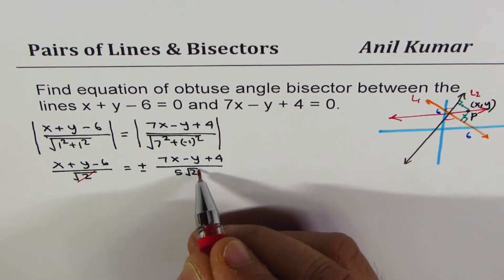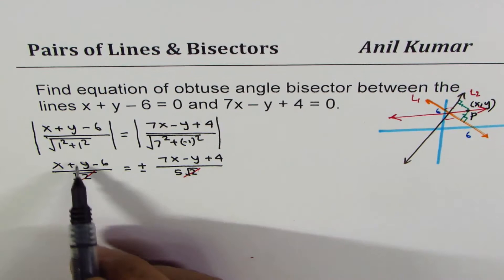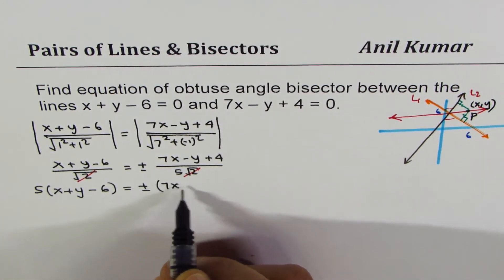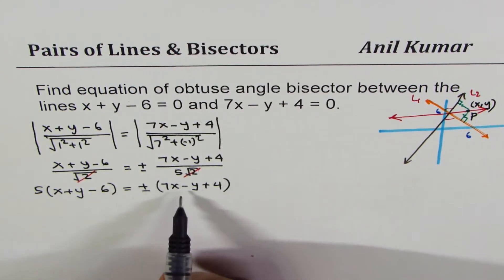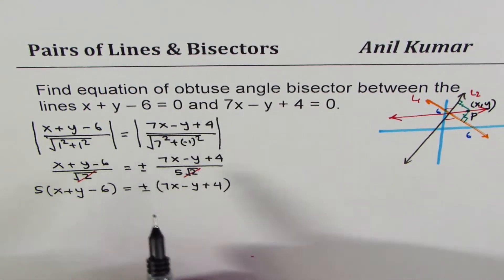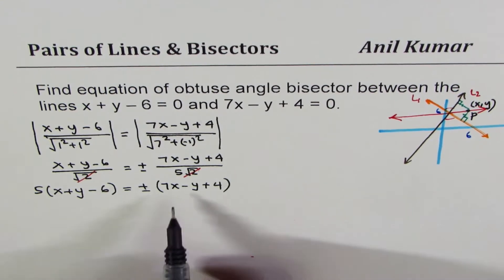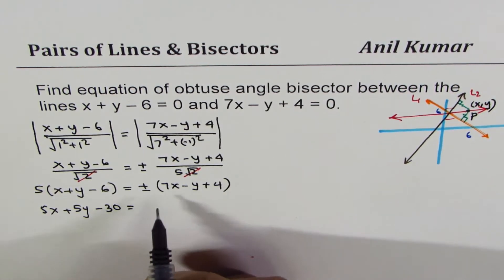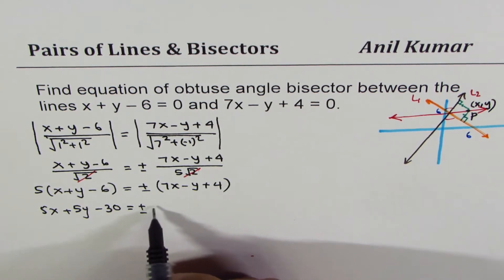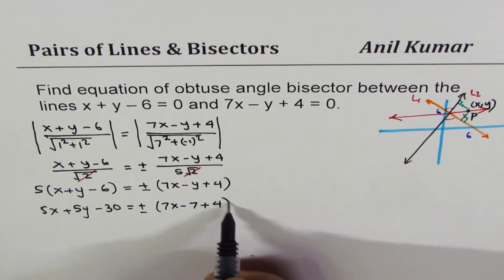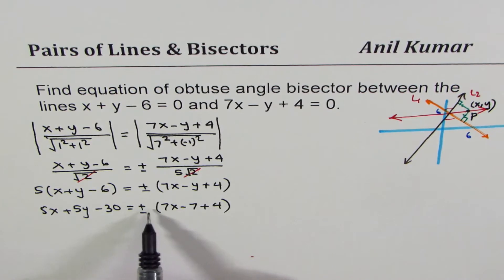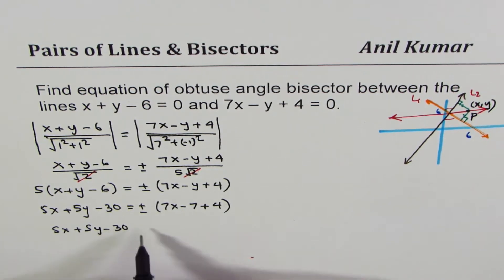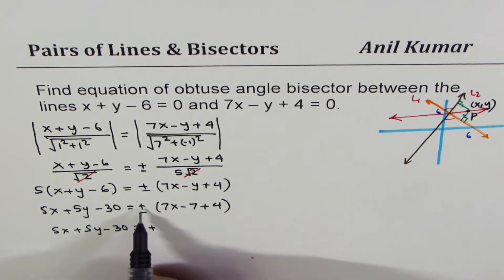Simplifying and cross-multiplying, we get 5 times (x plus y minus 6) equals plus or minus (7x minus y plus 4). The idea of plus or minus is that the absolute value makes the expression positive either way. Opening the brackets: 5x plus 5y minus 30 equals plus or minus (7x minus y plus 4).